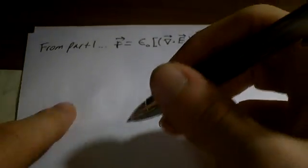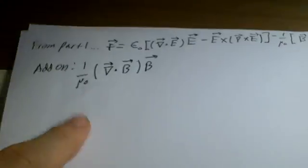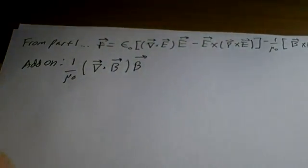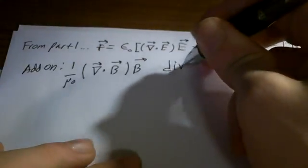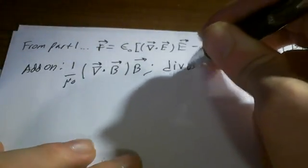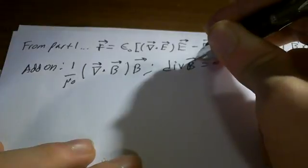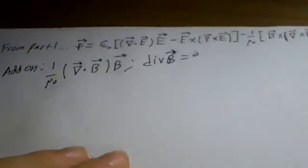What we can do is add on a term that won't do anything but will help make things look symmetric. So let's add on 1 over mu-naught times the divergence of B, times B. It's okay to add this on because the divergence of B is zero — that's from one of Maxwell's equations.